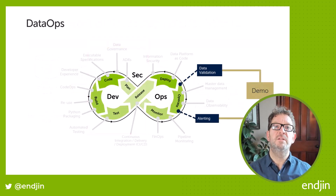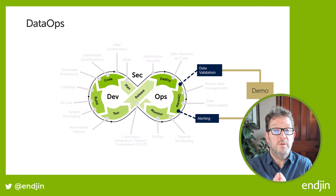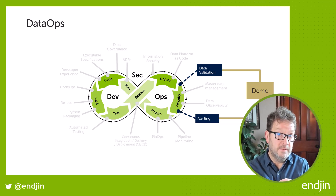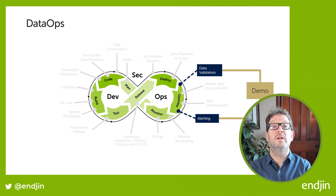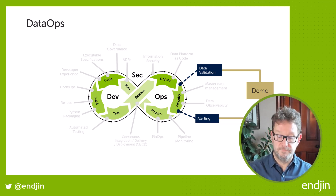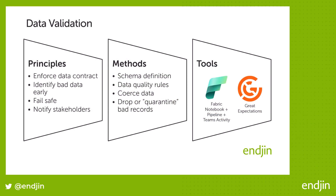In this series, we want to show how Fabric can deliver important DataOps principles. So we're going to take the opportunity to show how we can validate the data, and then alert relevant people within the organization if data validation issues are encountered. We all know the saying, rubbish in, rubbish out. So the principle here is to enforce a data contract that sets clear expectations around the quality of the data we will accept into our pipeline.